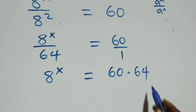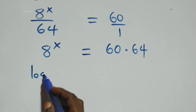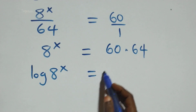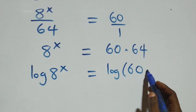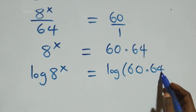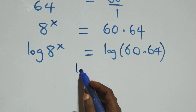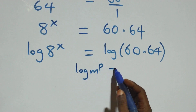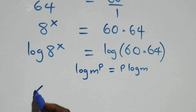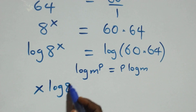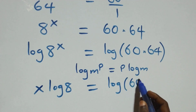Next we take the log on both sides: log of a raised to power x equals log of sixty times sixty-four. We apply the power log rule — log of m raised to power p equals p times log m — so this becomes x times log eight equals log of sixty times sixty-four.